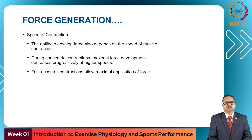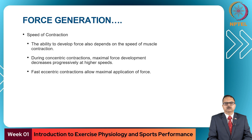The ability to develop force also depends on the speed of muscle contraction. During concentric contractions, maximal force is developed at slower speeds and decreases progressively as speed increases. A fast eccentric contraction, on the other hand, allows maximal application of force.